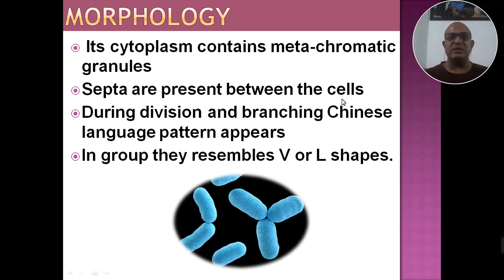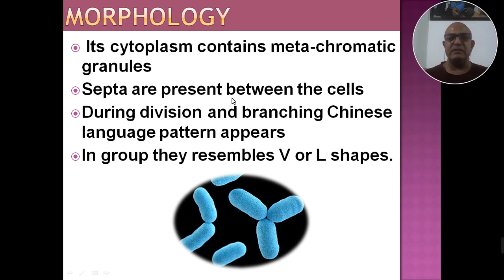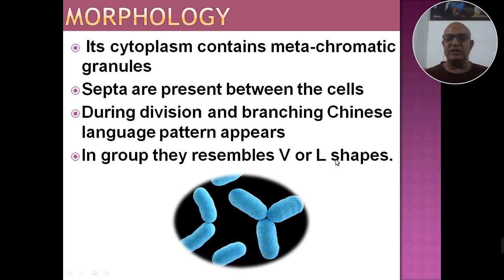Its cytoplasm contains metachromatic granules — इनके कोशिका द्रव्य में metachromatic कणिकाएँ पाई जाती हैं। Septa are present between the cells. During division and branching, a Chinese language pattern appears — जब इन bacteria में binary fission होता है या शाखाएं बनती हैं, तो colony देखने से ऐसा लगती है जैसे Chinese भाषा में कुछ लिखा हो। In groups, they resemble V and L shapes।